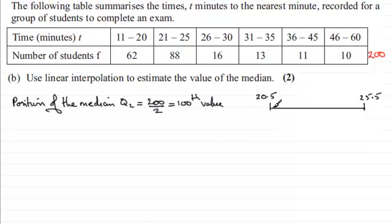And then underneath here, I say that there are 62 values less than 20.5. And then there's a total of 62 plus 88, which is 150 values, which are less than 25.5. Now we're looking for the hundredth value. So that is where the median Q2 is going to be. So it's going to be somewhere over here. That's Q2 and we're looking for the hundredth value.